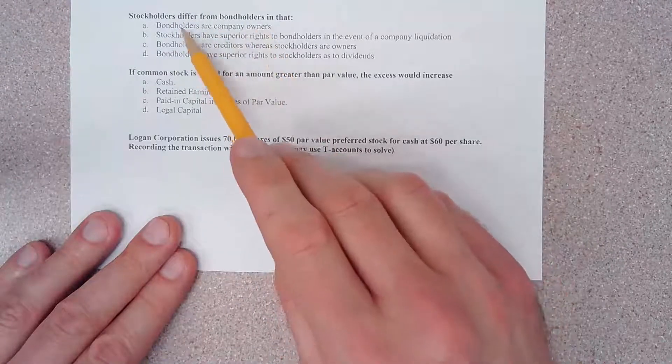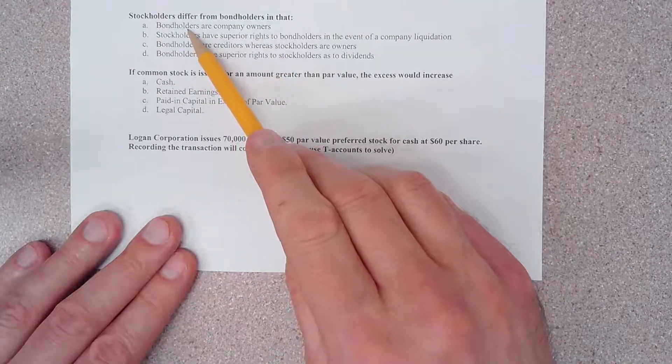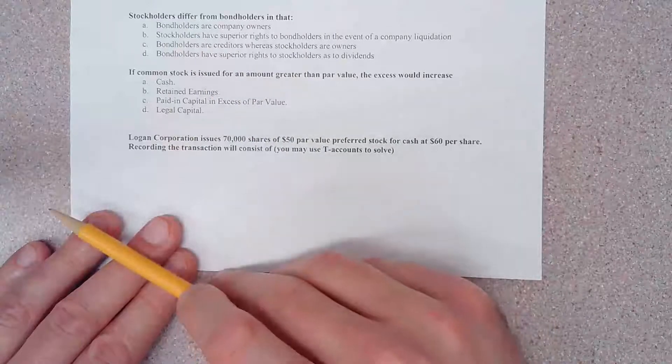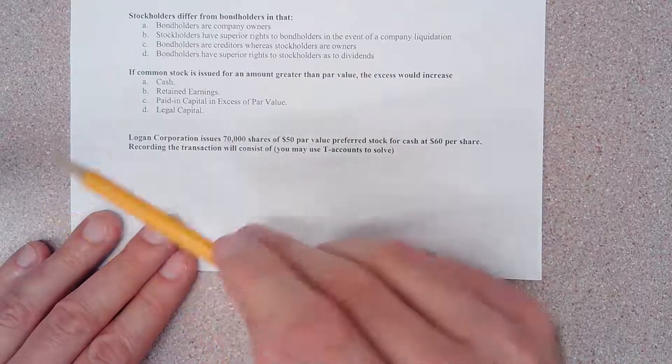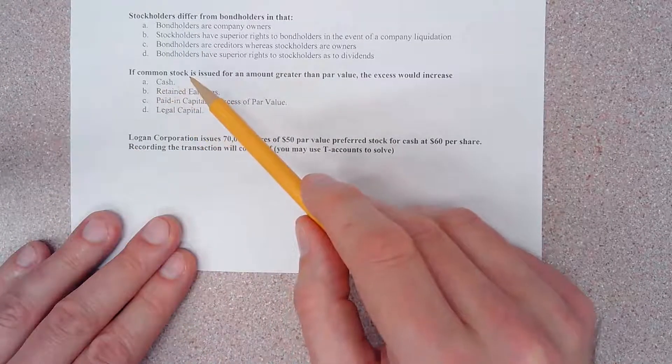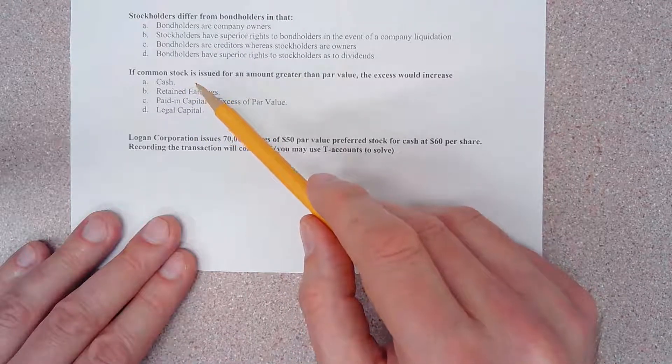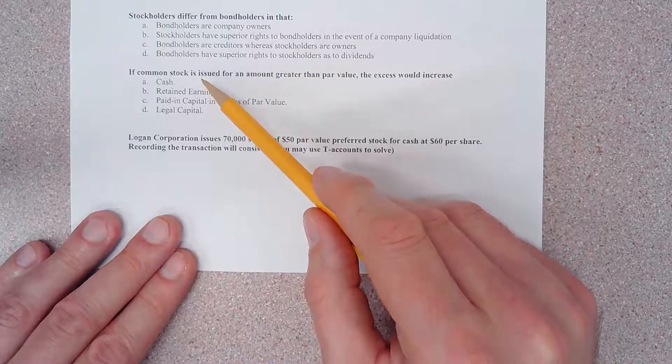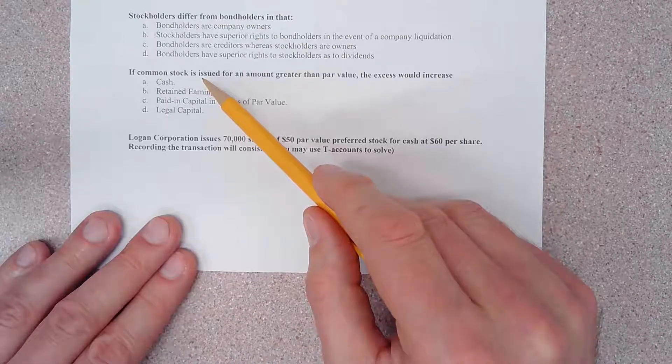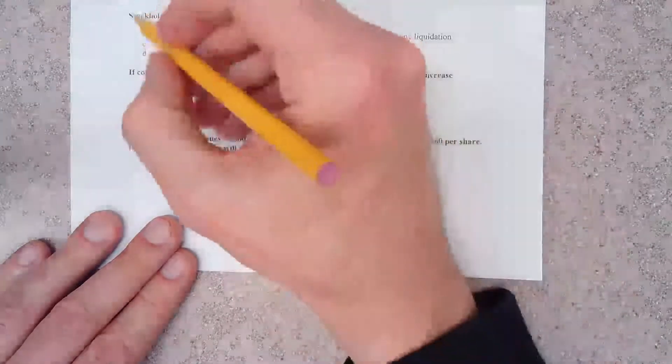Stockholders are company owners. Bondholders are creditors. When a company raises money by issuing bonds, they have created a liability, primarily a long-term liability. If you own a bond, you are a creditor of a company, not an owner.